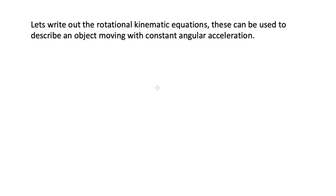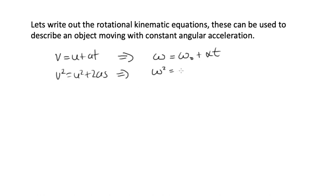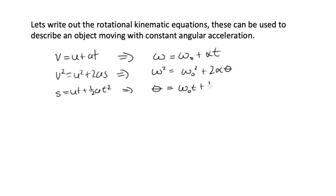The kinematic equations also have rotational analogues. v = u + at becomes ω = ω₀ + αt. v² = u² + 2as becomes ω² = ω₀² + 2αθ, where θ is the total angle traveled in radians. s = ut + ½at² becomes θ = ω₀t + ½αt².